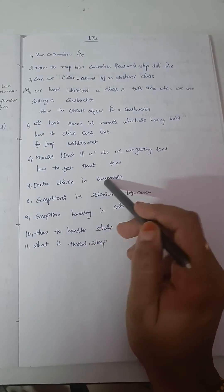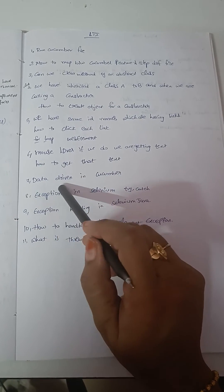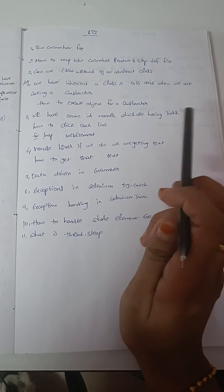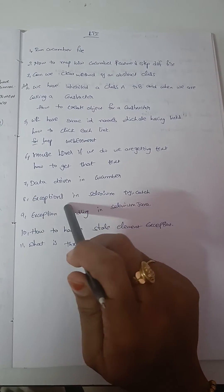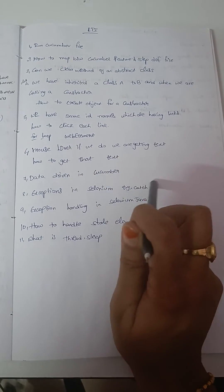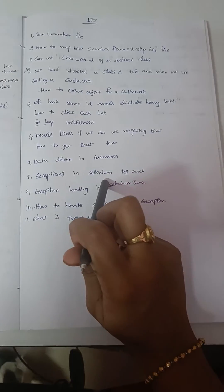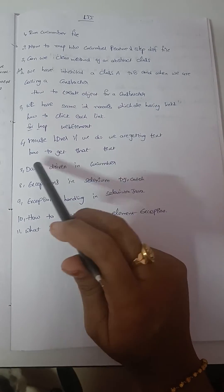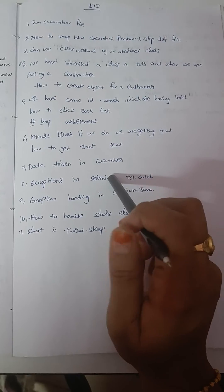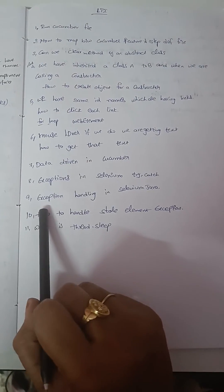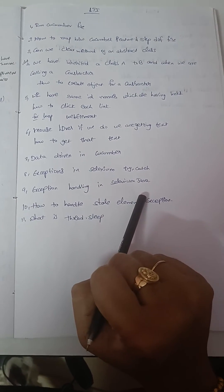Seventh question: how will we achieve data driven in cucumber framework? Eighth question: exceptions in Selenium try-catch - how we will be handling exceptions in Selenium? Ninth question: exception handling in Selenium with Java.